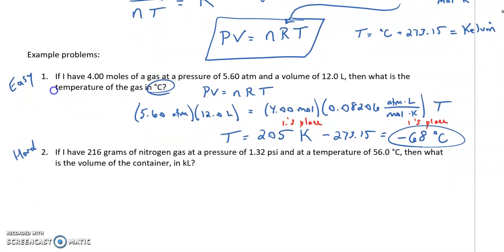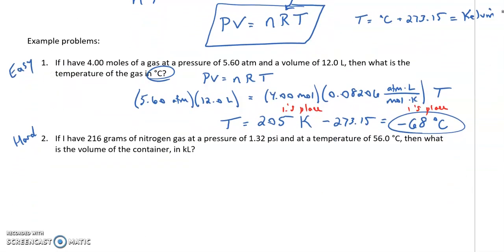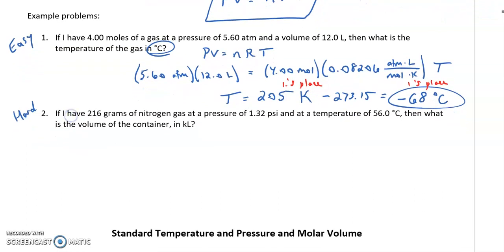All right, let's try a slightly harder one, which is the same exact idea, just adding a few more steps. So the first thing we'll see, if I have 216 grams of nitrogen, I see an immediate difference from the previous problem. Now it gives me grams, so I have to do a conversion to get grams into moles.